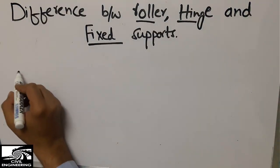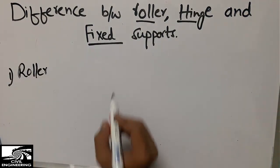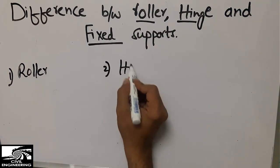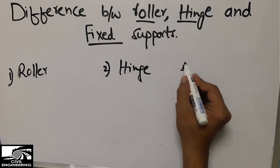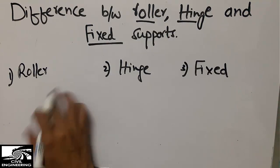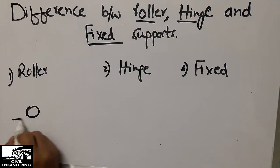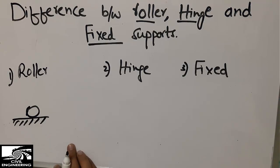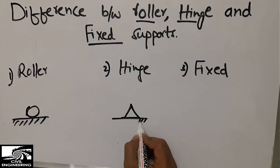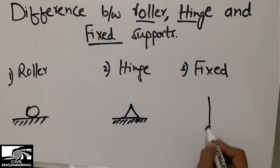The first one is a roller support, the second one is a hinge support, and the third one is a fixed support. The roller support is diagrammatically represented by an O-shape. The hinge support is represented by a triangle type, and the fixed support is represented like a wall-embedded symbol.